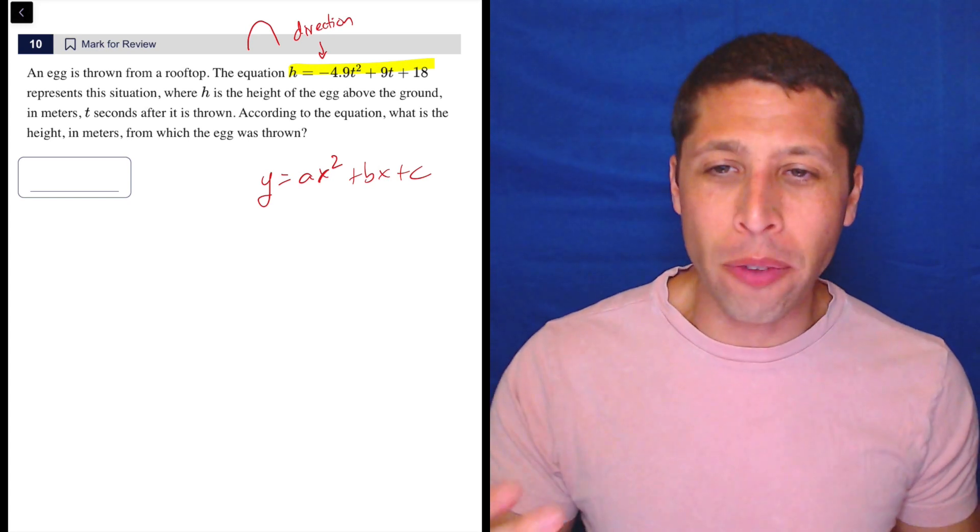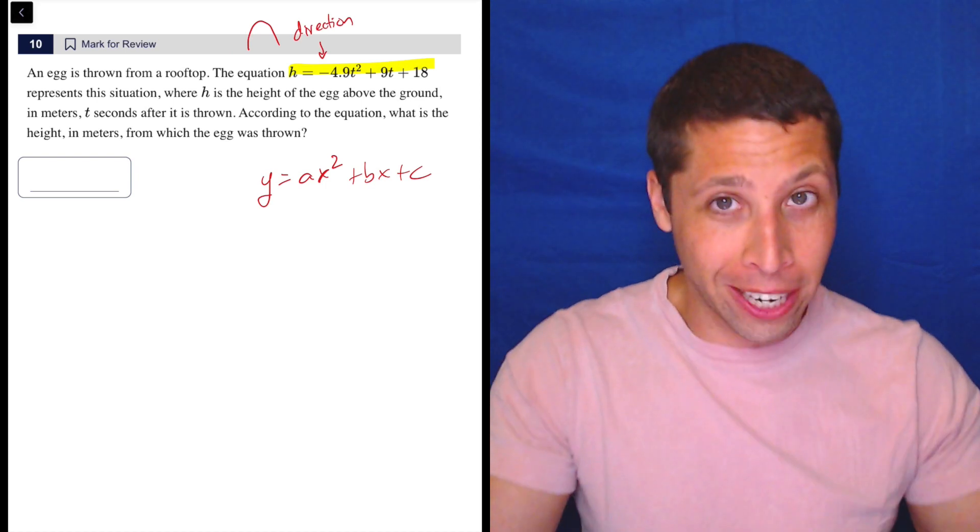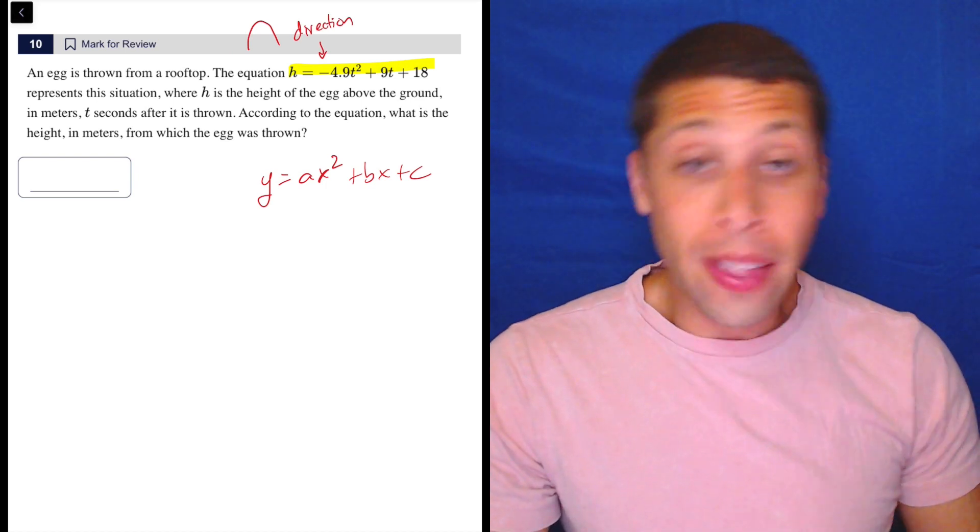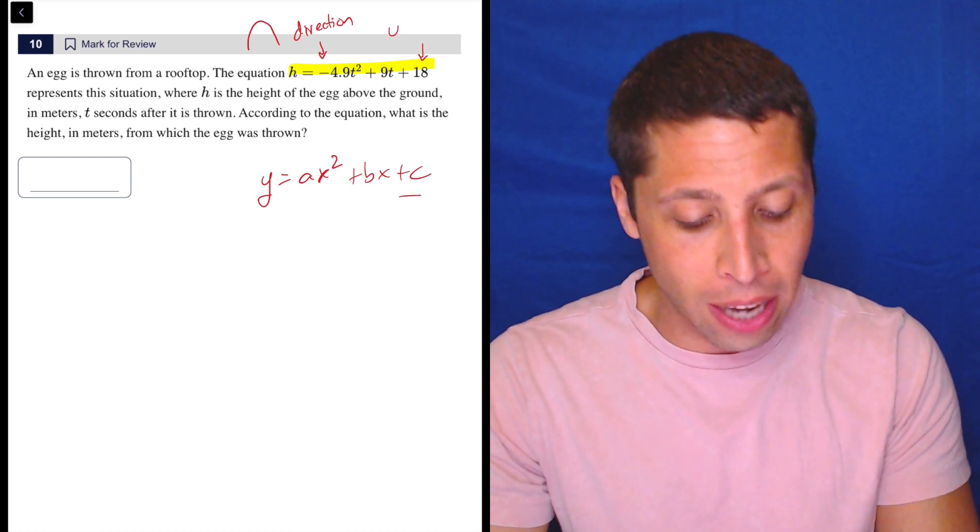And that makes sense, right? Because you're throwing it from a rooftop. Think about what happens. The egg goes up, and then it comes down. It's gravity. So, that's not really going to be helpful here, but we should also recognize that the c term is the y-intercept.